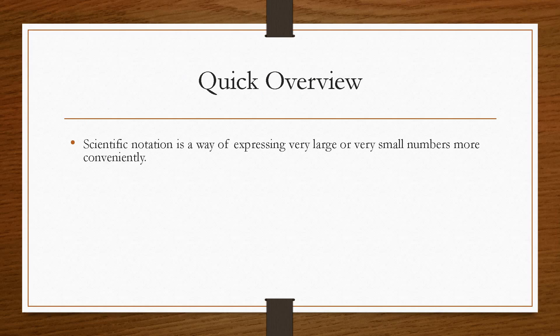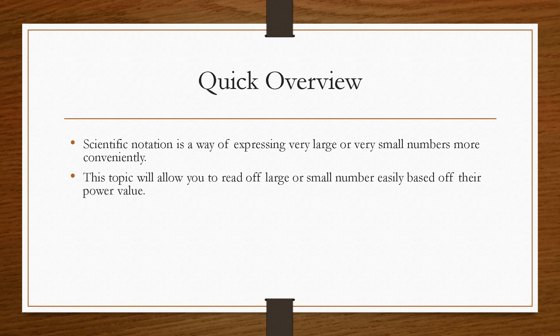So if we take a quick overview, Scientific Notation is a way in which we can express very large or indeed very small numbers in a more convenient fashion. And this topic will essentially allow you to read off very large or very small numbers easily based on their power value. So the power value here is quite important because that's the fundamentals of Scientific Notation.